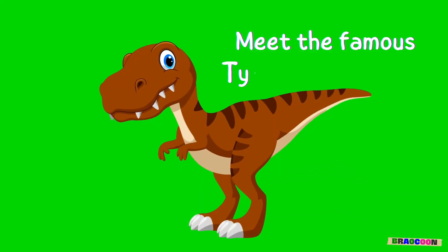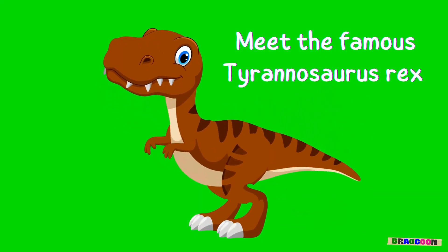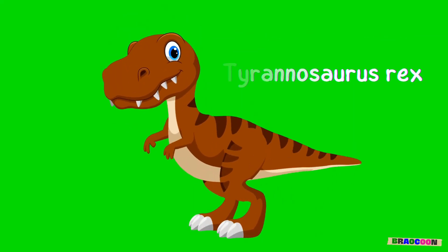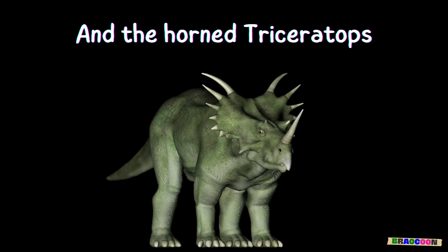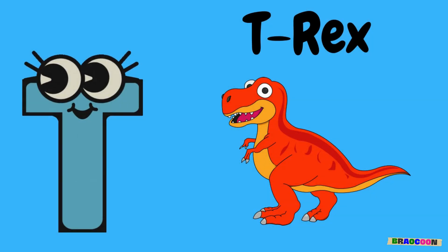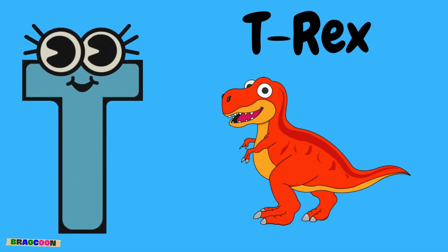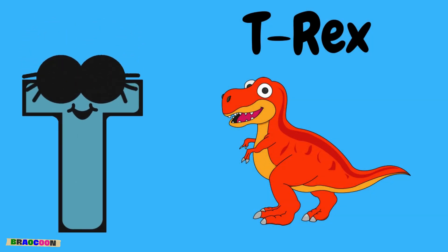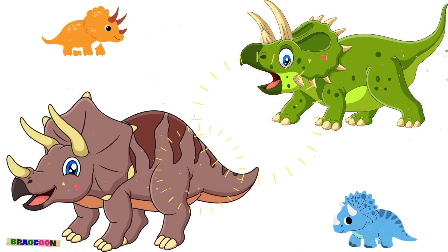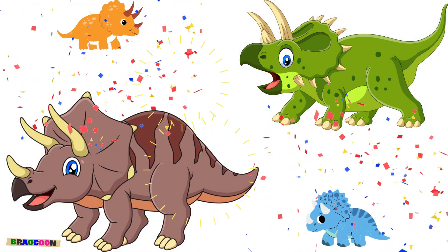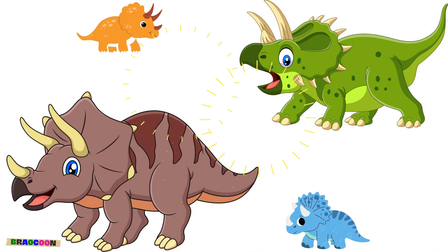Meet the famous Tyrannosaurus Rex and the horned Triceratops. The T-Rex was one of the largest meat-eating dinosaurs, and Triceratops had three horns to defend itself.